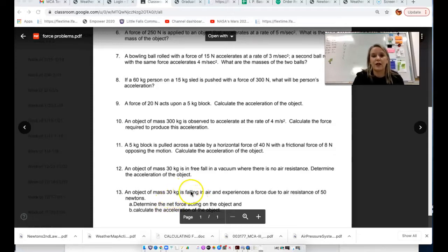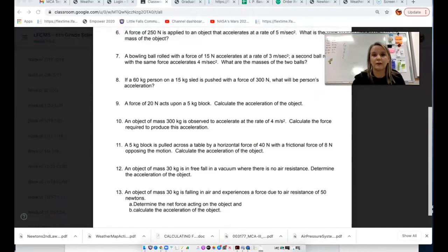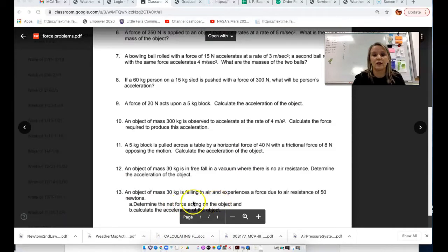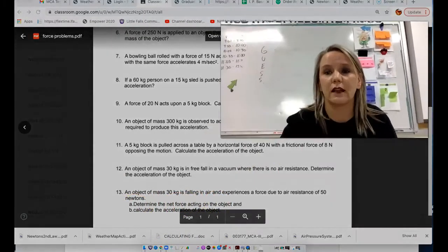And the acceleration of gravity is 9.8 meters per second squared. So, 30 kilograms is falling with an acceleration of gravity of 9.8 meters per second squared and experiences air resistance force of 50 newtons. So on this one, you go back to the board here. It's asking us to determine the net force and calculate the acceleration.